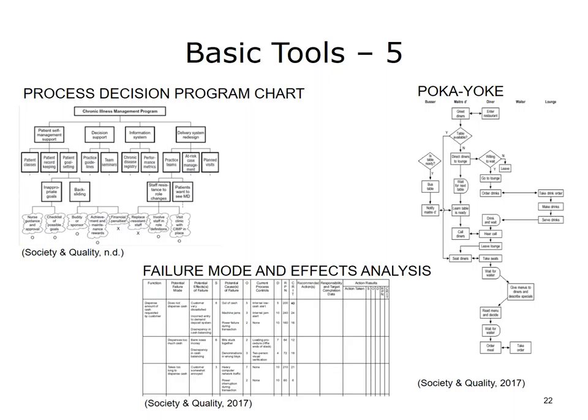Process Decision Program Chart: The Process Decision Program Chart is a type of contingency plan that guides the efforts of a team when things do not turn out as expected. The actions to be completed are listed, then possible scenarios about problems that could occur are developed, and management decides in advance which measures will be taken to solve those problems should they occur. This chart can be helpful when a procedure is new and little or no experience is available to predict what might go wrong.